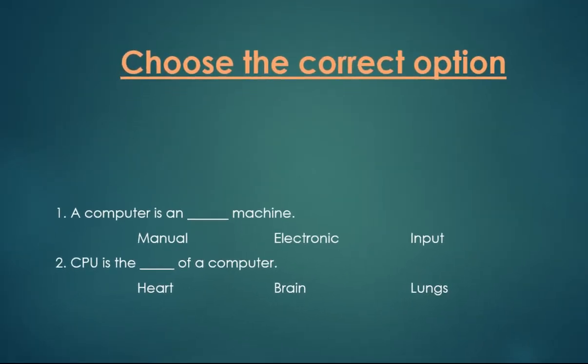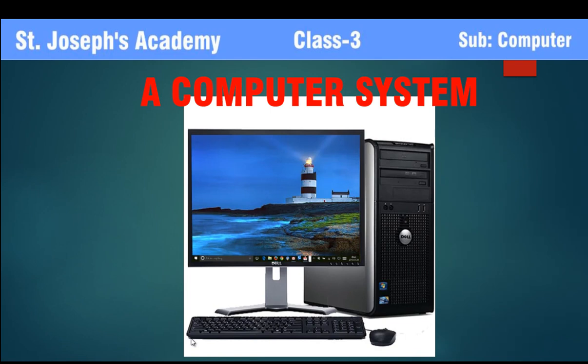Choose the correct option. A computer is a dashed machine. Options are manual, electronic, input. Second, CPU is the dash of a computer. Heart, brain, lungs. Students, try to solve all the questions by yourself and we will discuss the answer in the next class.